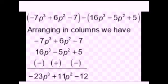In this example, first of all, we arrange in column. But remember, arrange like terms in such a way that they are one below the other. Always remember, in the sum of subtraction, we change the sign to the terms of subtraction, and then we add.